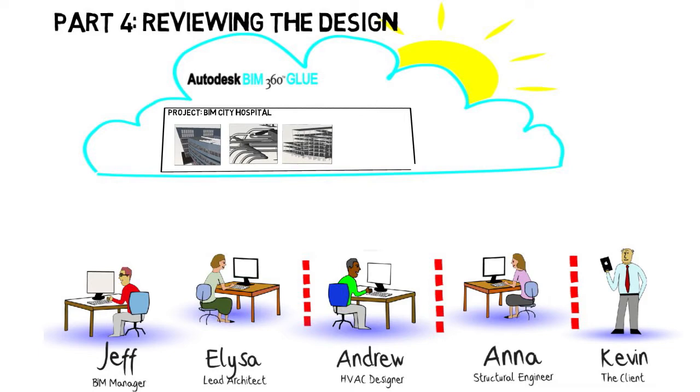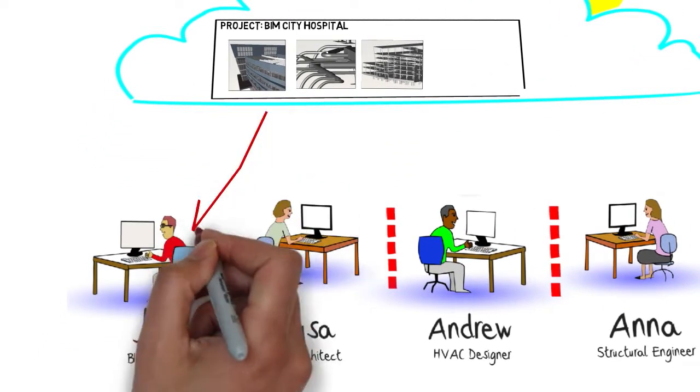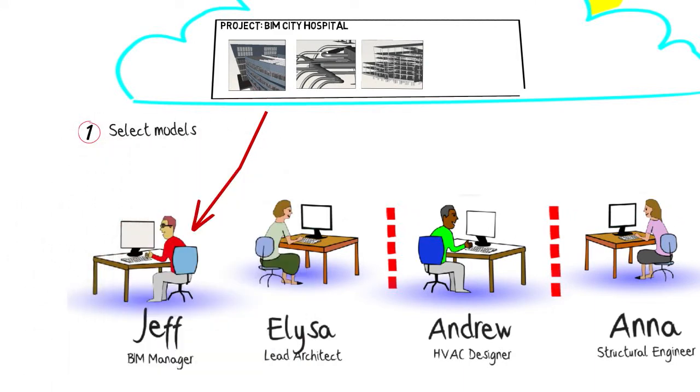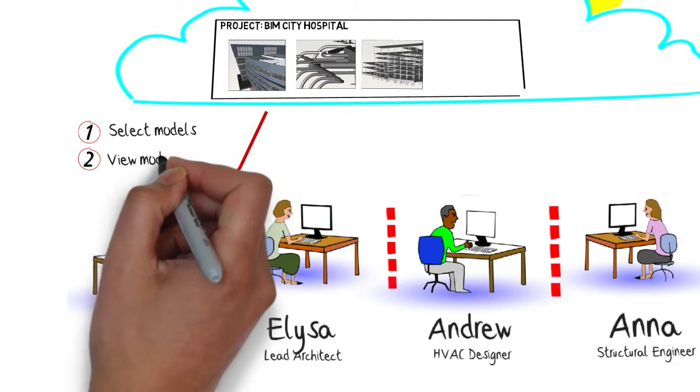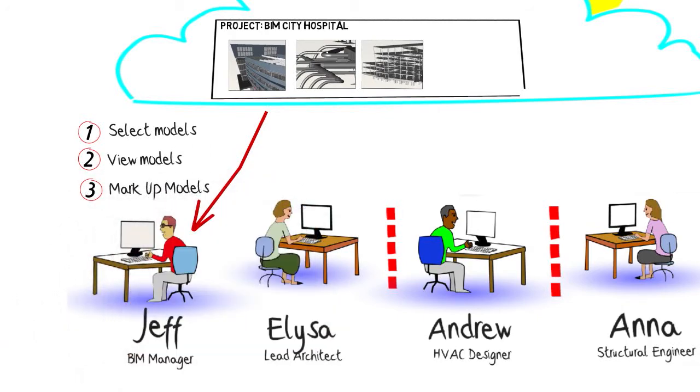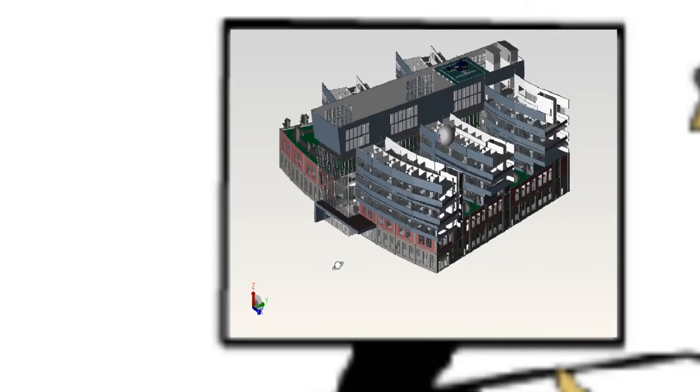Once Jeff, the project manager, sees that all three models are loaded, he can review the models in 3D. The first step is to select the models he wants to view. He can then view the models in a variety of ways, and finally he can mark up the models if so desired. Let's take a closer look at Jeff's computer to see this in action.